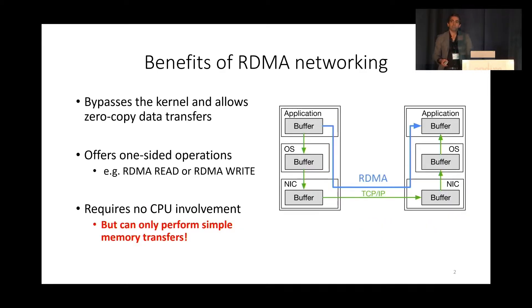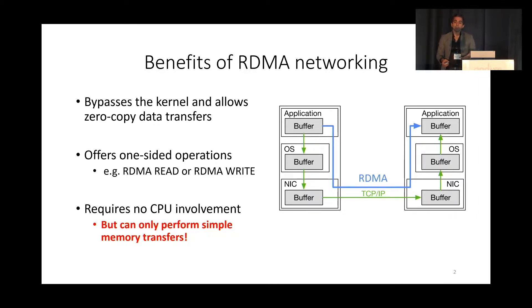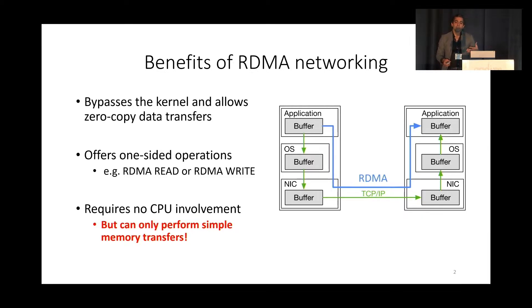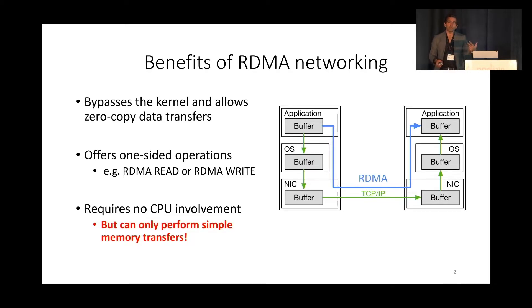Before I get started, let me talk a little bit about the benefits of RDMA. One of the major things about RDMA networking is that it allows you to bypass the kernel, and it also provides some convenient abstractions such as RDMA read and write, which allows you to manipulate remote memory. One of the downsides is that you can only manipulate remote memory, but if you want to do anything more complicated, you obviously need to involve the server CPU.